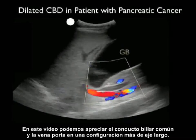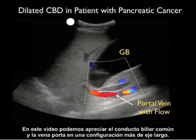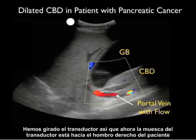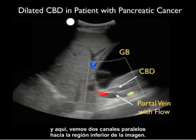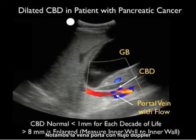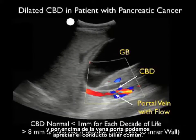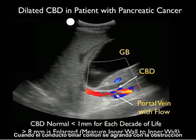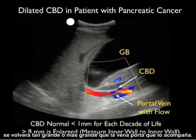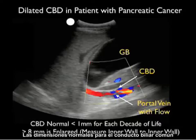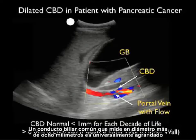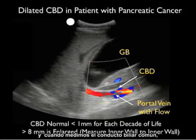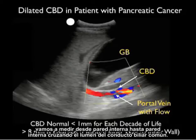In this video clip, we can appreciate the common bile duct and portal vein in a long axis configuration. The probe marker is towards the patient's right shoulder. We see the gallbladder at the top and two parallel channels below — the portal vein with Doppler flow, and the common bile duct on top of it. As the common bile duct enlarges with obstruction it becomes as large or larger than the portal vein. Normal CBD dimensions are no greater than one millimeter per decade of the patient's life. A diameter greater than eight millimeters is universally enlarged, and we measure from inner wall to inner wall.